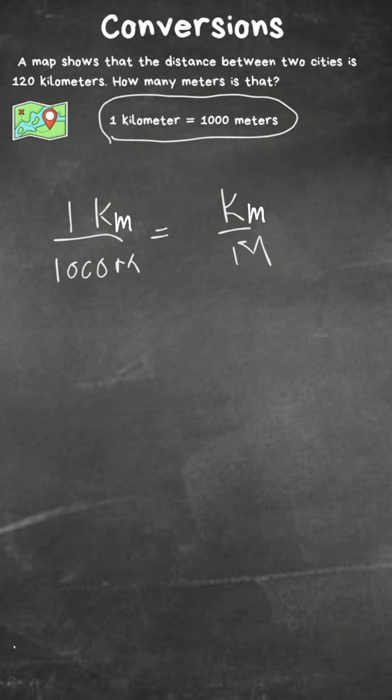Now, for this kilometers, let's use what is given. And we know that it's 120 kilometers between the two cities. So I'm going to write 120 there, and meters is x.